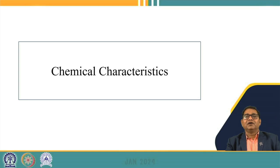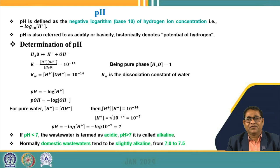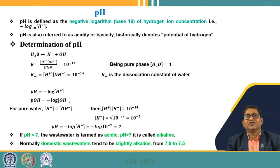Those were the major physical characteristics of wastewater. We also have more detailed characterization of chemical impurities, which comes under chemical characterization. This includes various types of acids, metals, acidity, alkalinity, hardness, and many more parameters, which we will deal with one by one.